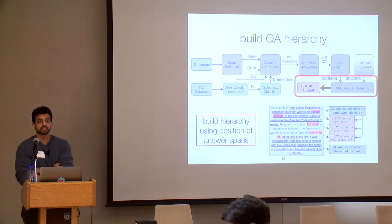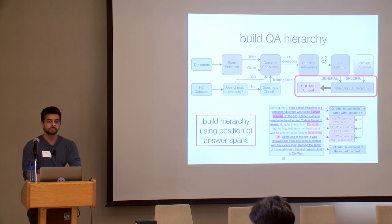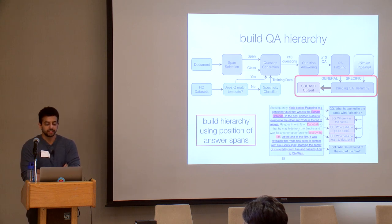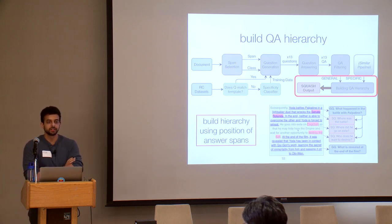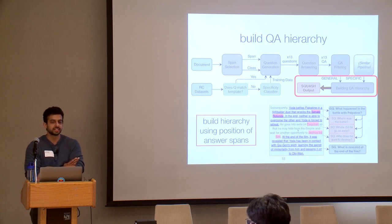When generating a specific question, we do not condition on the general question — we generate all of them independently, so the specific question doesn't know what the general question is. We would like to incorporate that dependency, but it's hard to get data for it. We only really know the general and specific labels; adding additional dependence becomes a latent variable problem.